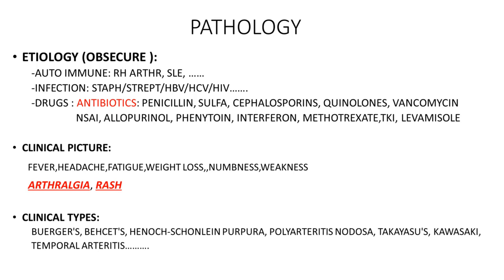The clinical picture of vasculitis is non-specific — fever, headache, malaise, and weakness. Arthralgia and skin rash should raise suspicion of vasculitis. Clinical types include Buerger's disease, Behçet's disease, Henoch-Schönlein purpura, Takayasu disease, and others.